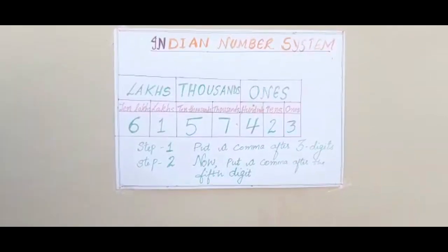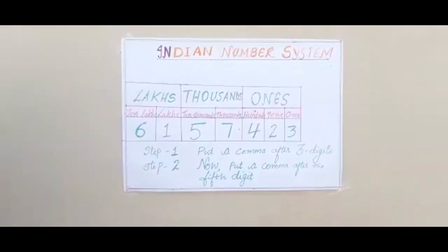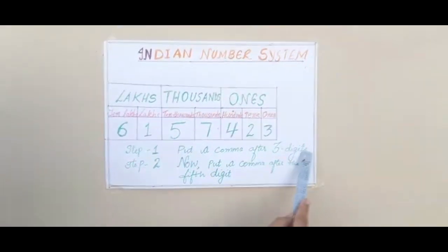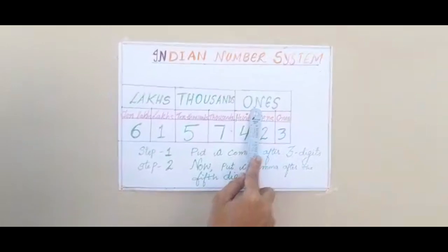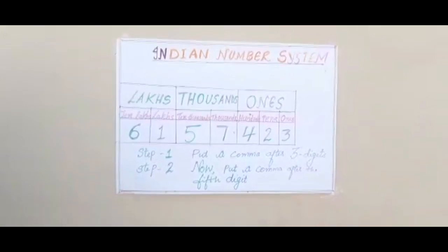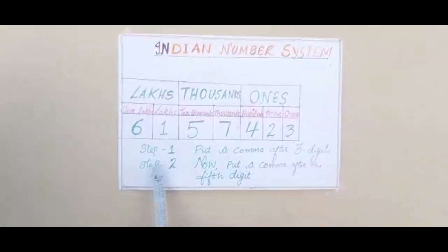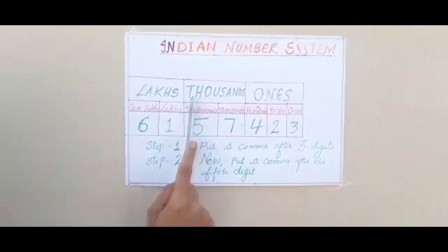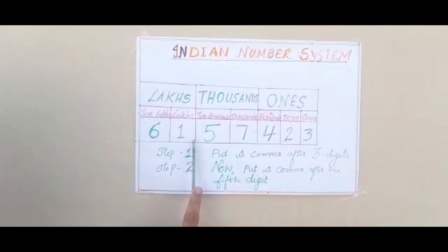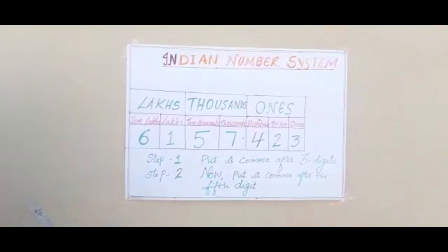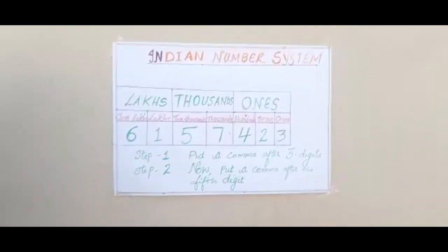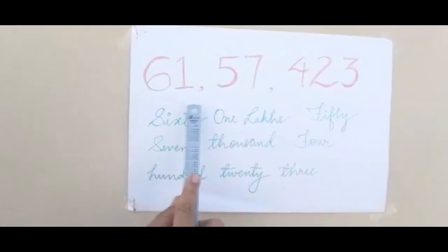Now let's see how you can write and read these numbers easily. The first step is to put a comma after three digits — that is, after the ones period. So for 3, 2, 4, we put the first comma. Then the next comma comes after five digits — once the thousands period is over — so after digits one, two, three, four, five, we place the second comma.